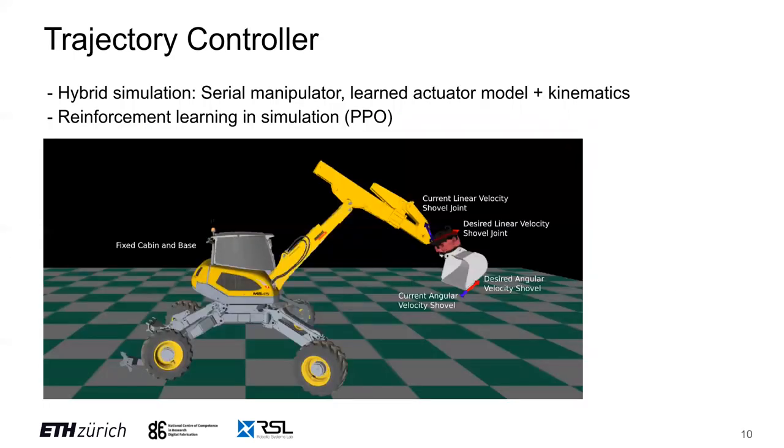Now that we have the actuator network, we set up a hybrid simulation consisting of the learned actuator model and a kinematic model of the excavator. We use reinforcement learning to train a controller to deal with the highly nonlinear actuator dynamics and learn optimal control inputs through trial and error. The task for the RL agent is to compute control actions that track a random desired linear and angular velocity of the shovel in task space, visualized using red and blue arrows.